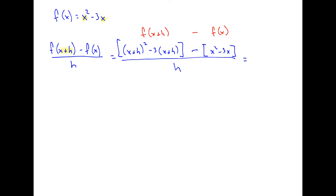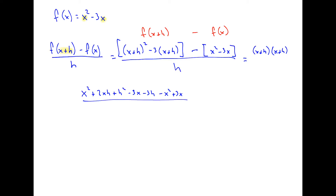We square x plus h: x plus h times x plus h gives x squared plus xh plus xh, so x squared plus 2xh plus h squared. Then we distribute the negative 3 to get negative 3x minus 3h. Then we distribute the negative on the minus f of x part to get minus x squared plus 3x. All still over h. Simplifying: the negative 3x and positive 3x cancel, the x squared and negative x squared cancel, leaving 2xh plus h squared minus 3h over h.